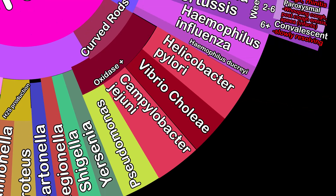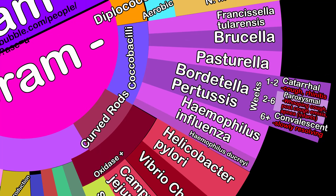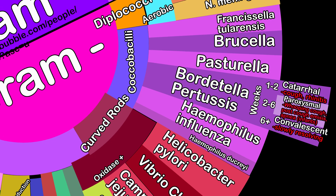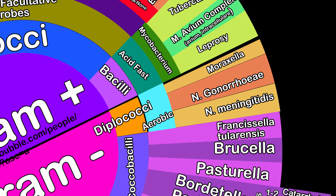All the curved rods are oxidase positive, along with the bacillus pseudomonas. Coccobacilli notable germs include Bordetella pertussis, aka whooping cough, along with Haemophilus influenzae. Diplococci are important because it includes Neisseria species — gonorrhea, an STI, and meningitidis, an important CNS infection.